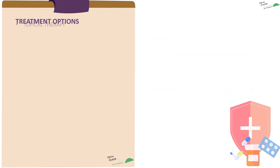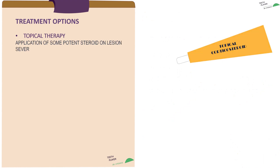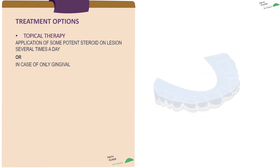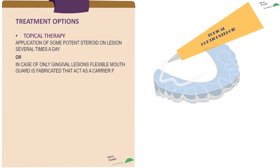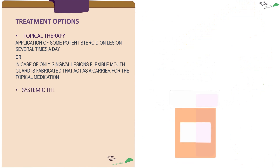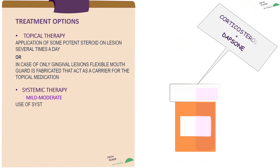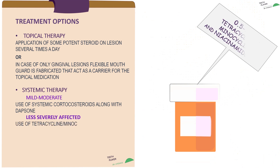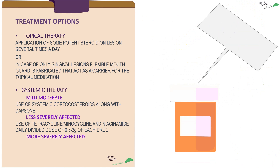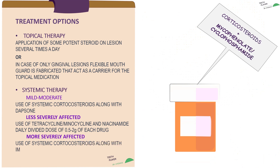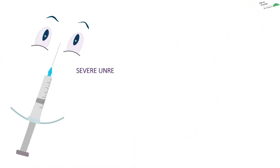Topical therapy involves application of a potent steroid on lesions several times a day, or in case of only gingival lesions, a flexible mouth guard is fabricated that acts as a carrier for the topical medication. For systemic therapy: mild to moderate cases use systemic corticosteroids along with dapsone. For less severely affected individuals, tetracycline, minocycline, and niacinamide in a daily divided dose of 0.5 to 2 grams of each drug is used. More severely affected individuals use systemic corticosteroids along with immunosuppressive agents like mycophenolate and cyclophosphamide. For severe unresponsive cases, IV human immunoglobulin, pulsed IV cyclophosphamide, and rituximab — an anti-CD20 monoclonal antibody — are being used.